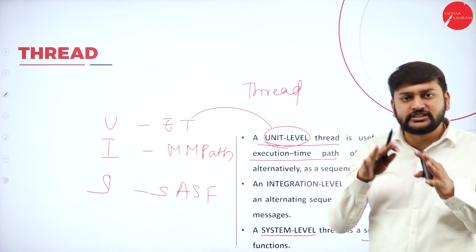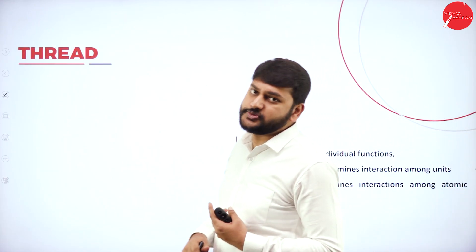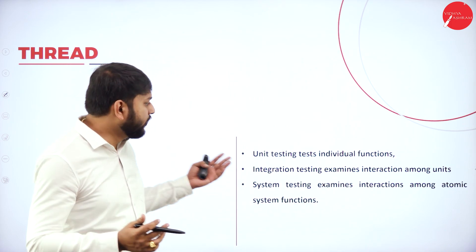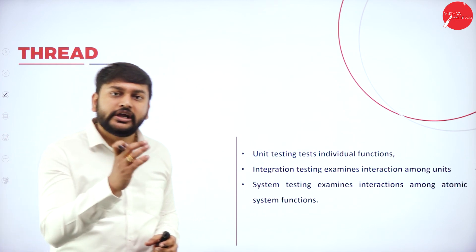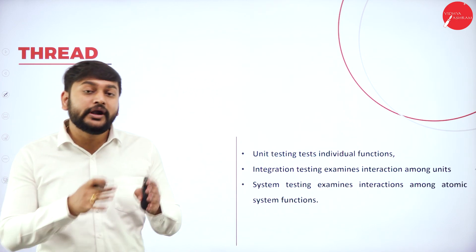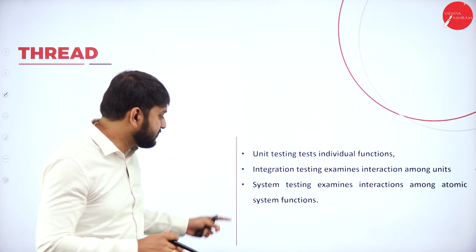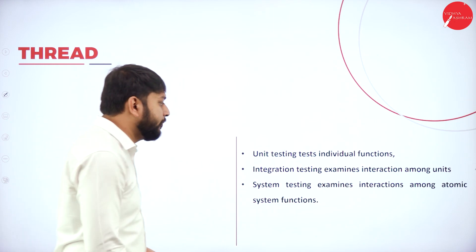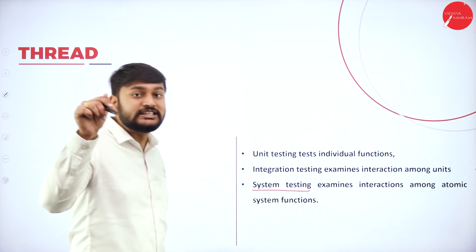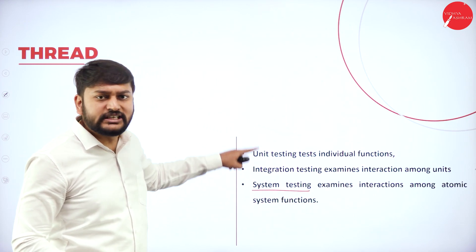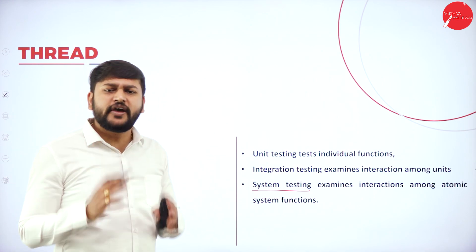We have understood the basic concepts of threats. Now let's understand how threats play a role at different testing levels. At the unit level, a thread is understood as an execution-time path of source instructions, or alternatively as a sequence of DD paths. So unit-level threat mainly focuses on execution-time path, or we can call it a DD path.